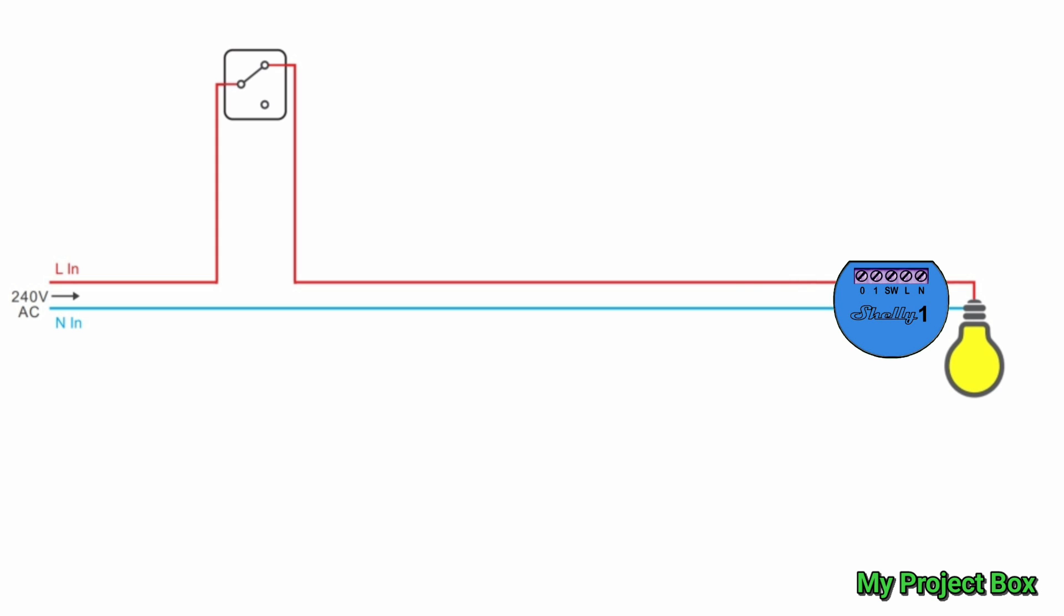The only problem is its live supply would now be broken by the switch which means if you turn the light switch off our Shelly 1 is disabled and we don't have any Wi-Fi control. So we don't have a permanent live supply but we do have the switch supply which is the signal to trigger the Shelly 1. So all we need to do is to find a way to supply the Shelly 1 with power and at the same time to be able to utilize the switch as a trigger. And this is where my little clever circuit hack comes in.